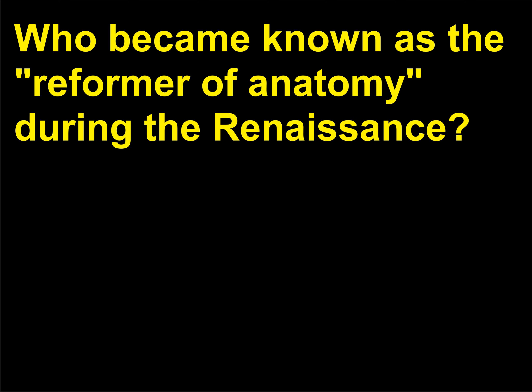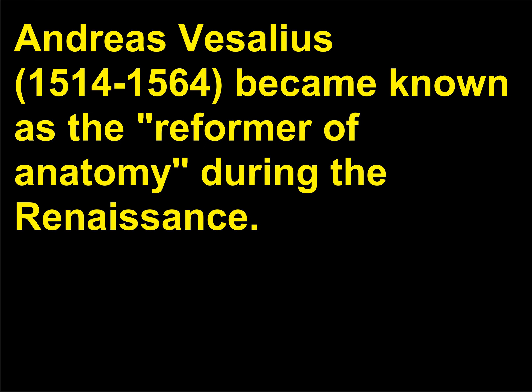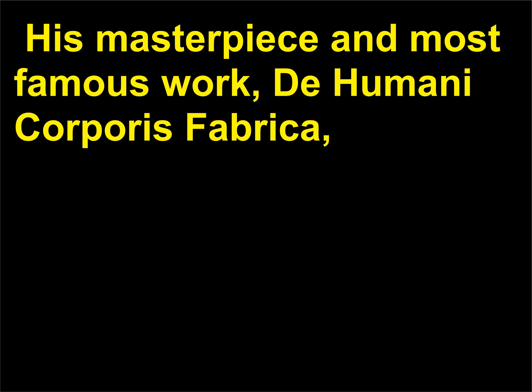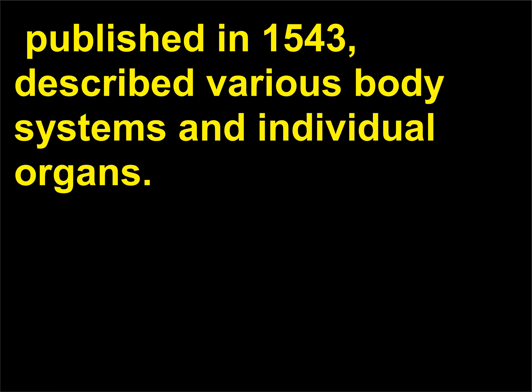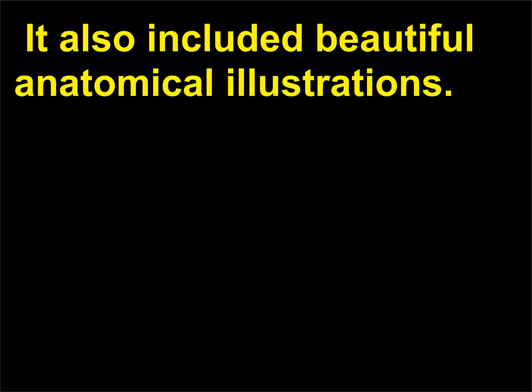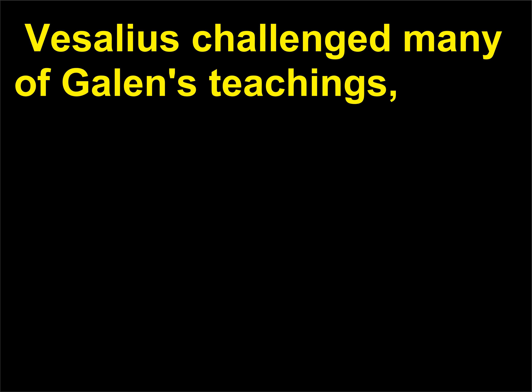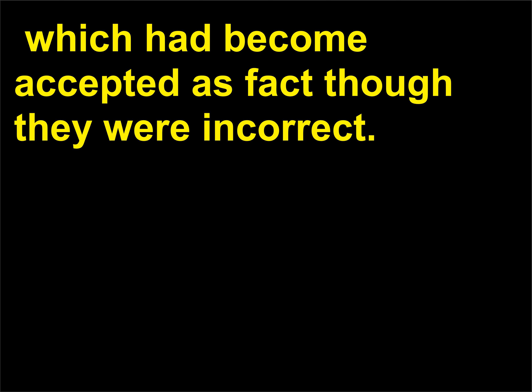Who became known as the reformer of anatomy during the renaissance? Andreas Vesalius, 1514-1564, became known as the reformer of anatomy during the renaissance. His masterpiece and most famous work, De Humanae Corporis Fabrica, published in 1543, described various body systems and individual organs. It also included beautiful anatomical illustrations. Vesalius challenged many of Galen's teachings, which had become accepted as fact though they were incorrect.